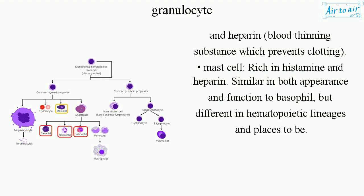Mast cell: rich in histamine and heparin. Similar in both appearance and function to basophil, but different in hematopoietic lineages and places to be.